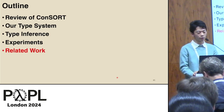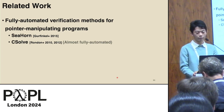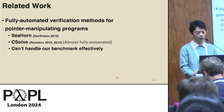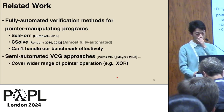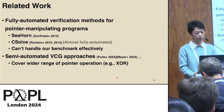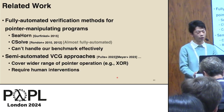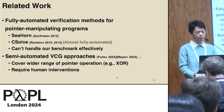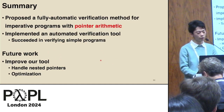Let me explain the related work. There are some fully automated verification methods for pointer manipulating programs. However, these methods do not work well in the presence of pointer arithmetic — in fact, they do not effectively handle our benchmarks. Additionally, there are some semi-automated verification condition generation approaches for pointer manipulating programs. These approaches cover a wider range of pointer operations, such as XOR, but require heavy human interventions like annotations of loop invariants and pre/post-conditions for recursive functions. This concludes the summary of this presentation. Thank you.